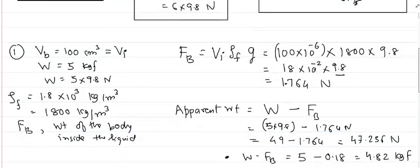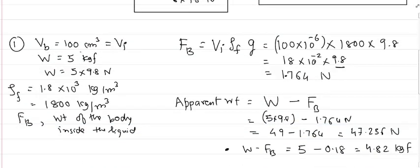The first question: a body of volume 100 centimeter cube weighs 5 kgf. It is completely immersed in a liquid, so the immersed volume VI equals the total volume VB. The density of the liquid is 800 kg per meter cube. We are asked to find the upthrust and the weight of the body inside the liquid.